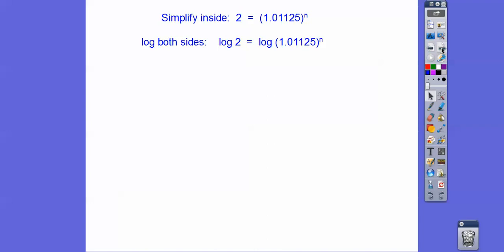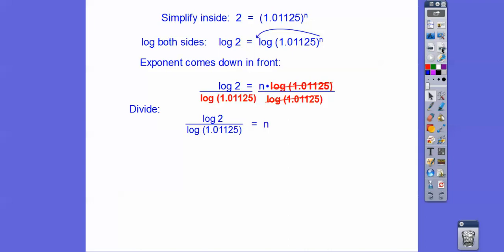Now we're going to log both sides. I chose base 10 because our calculators will let us do that. The exponent floats out in front. Then we divide both sides by that log. Pick up your calculator, plug that in, and we get the result.